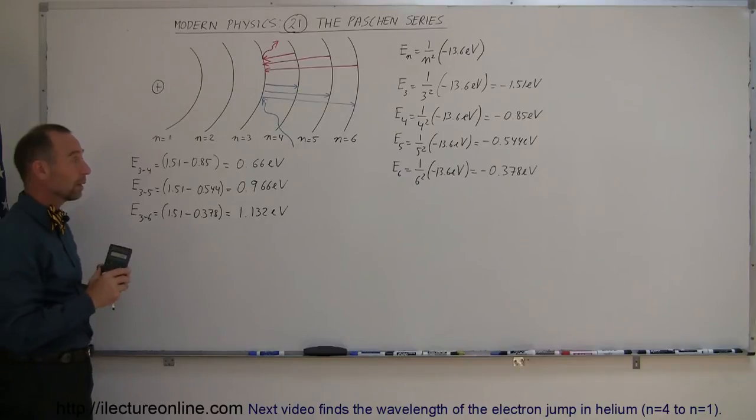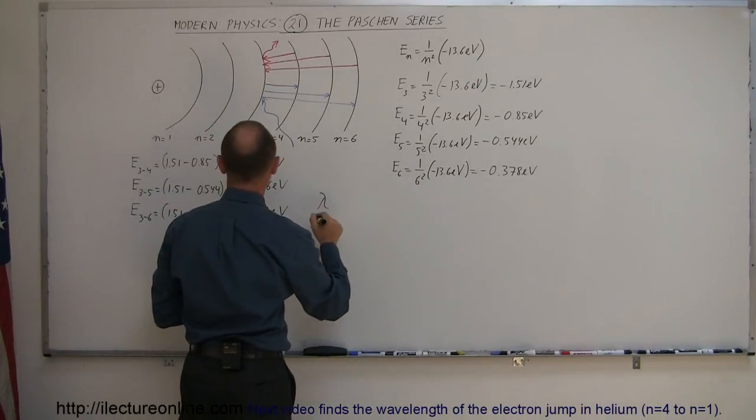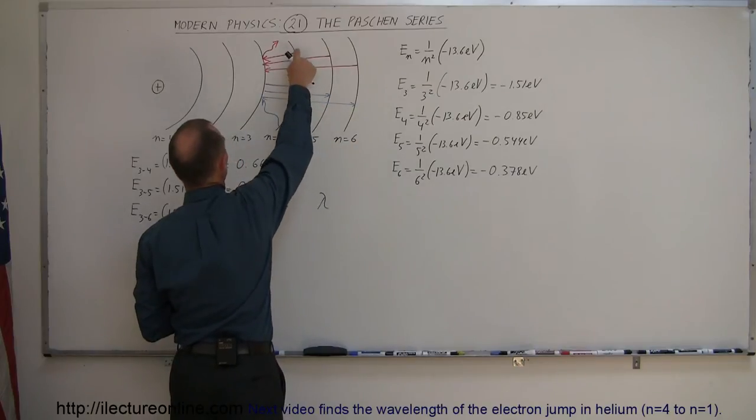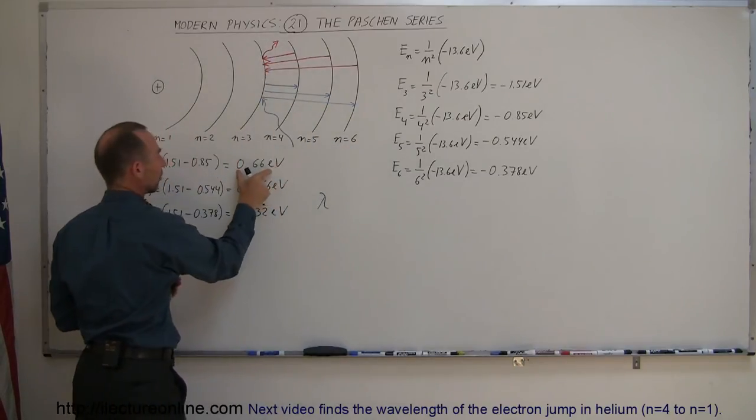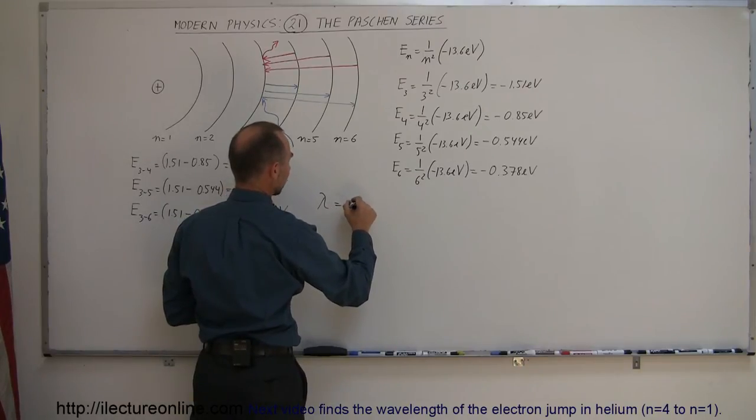Now we want to find the corresponding wavelengths of those photons when they're emitted or absorbed by those particular jumps. So the wavelength obtained, or emitted, when an electron jumps from the fourth down to the third level, and we're going to use this energy difference right here, is equal to hc over the energy difference.